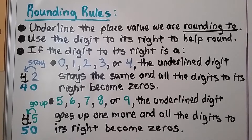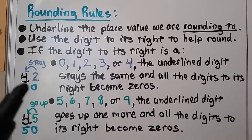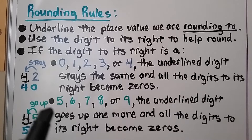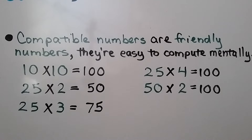Remember the rounding rules: underline the place value you're rounding to and use the digit to its right to help you round. If the digit to the right is 0, 1, 2, 3, or 4, the underlined digit stays the same and digits to its right become zeros — so 42 rounds to 40. If the digit is 5, 6, 7, 8, or 9, the underlined digit goes up by one and the digits to the right become zeros — for example, the 5 tells the 4 to go up to 5, then becomes a 0.